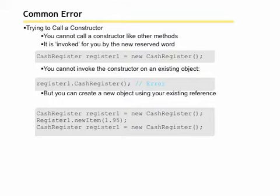It's a common error to try to call the constructor. You cannot call the constructor like other methods. It's a special method that is invoked by the keyword new, and that's the only way it can be called. You can't call it from an existing object such as register1.cashregister. That will result in an error. But you can call it by using the keyword new when you create a new object.